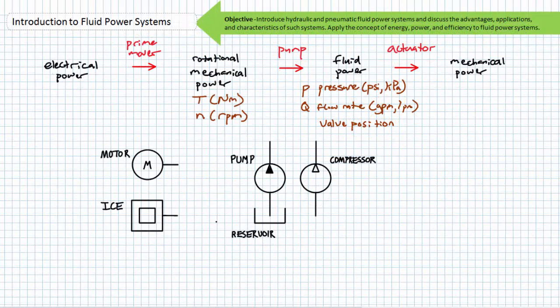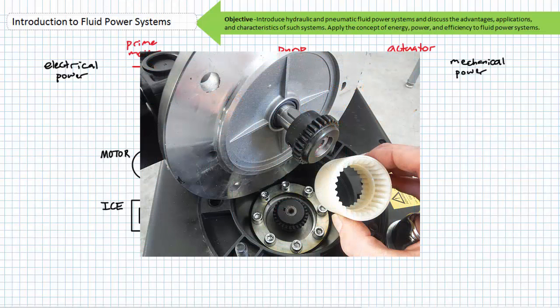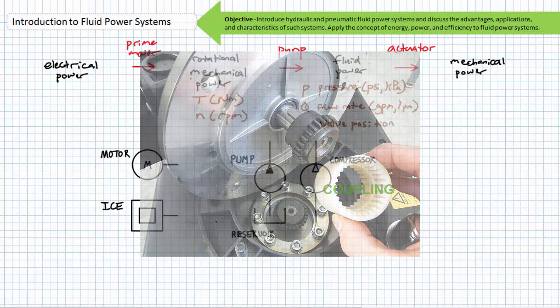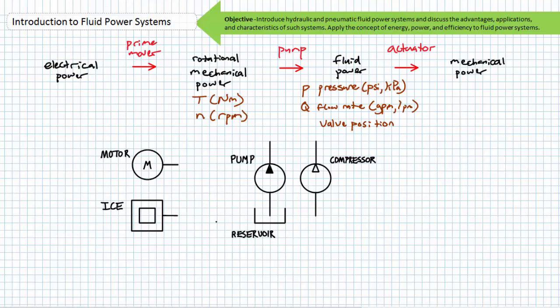Sometimes the fluid power schematic may include the motor and shaft linked to the pump. Electric motors are often illustrated as an M in a circle. Internal combustion engines are often illustrated as a box inside a box. Both motors and internal combustion engines can be considered prime movers. The pump isn't ordinarily directly driven by the prime mover, but rather the two shafts are linked via a coupling. The coupling compensates for misalignment and allows a technician to take the pair apart for maintenance and repair purposes. When the prime mover turns the shaft to the pump, the pump produces flow measured in units of volume per time — ordinarily gallons per minute or liters per minute.